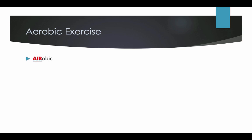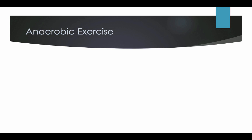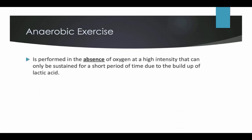Aerobic exercise involves air. This is performed in the presence of oxygen at a low intensity over prolonged periods of time — for example, a marathon run. This relates to slow twitch muscle fibres. Anaerobic exercise is performed in the absence of oxygen at a high intensity that can only be sustained for short periods of time due to the build-up of lactic acid — for example, a 100m sprint. This is linked to fast twitch muscle fibres.